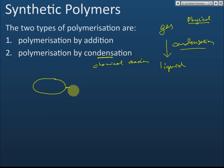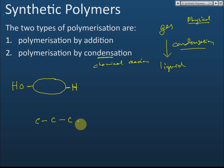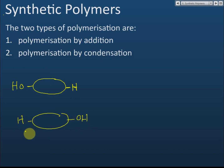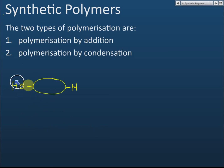In condensation reactions, consider a molecule that has an OH group on one side and an H on the other side — for example, propanol. This OH group is called a hydroxyl group. When we have multiple such molecules, the H from one molecule and the OH from another can meet.